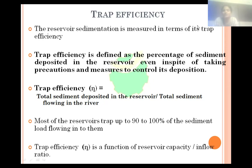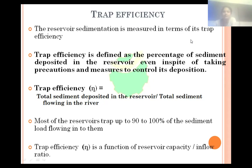The formula for Trap Efficiency is equal to total sediment deposited in the reservoir divided by total sediment flowing in the river. So, how much sediment is deposited in the reservoir versus how much is flowing in — most reservoirs trap up to 90 to 100% of the sediment. Trap Efficiency is a function of the reservoir capacity-to-inflow ratio.